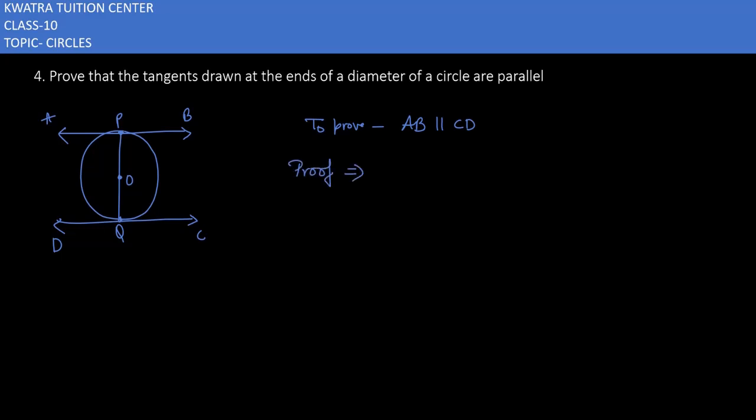Now what will be there under proof? We have to show that this is our radius. And you can tell that this is the tangent. The tangent and the radius at the point of contact...